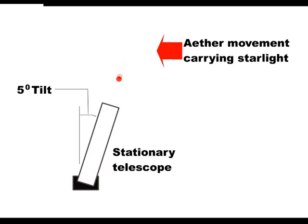As we see here, the light would be coming in at the same angle and the telescope would still have to be tipped 5 degrees. So tipping the telescope does not tell us whether it is the starlight moving or the telescope moving.